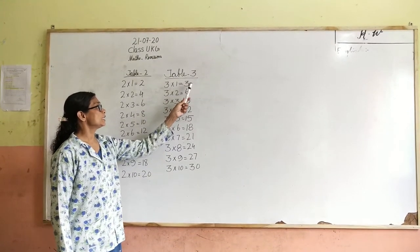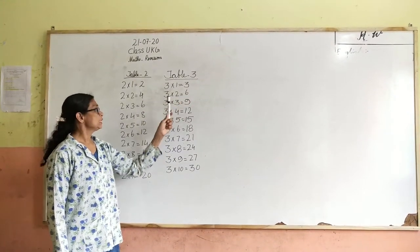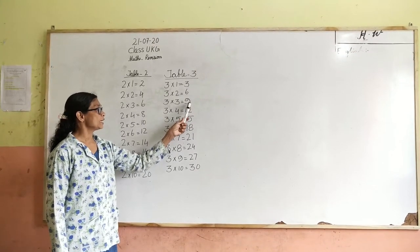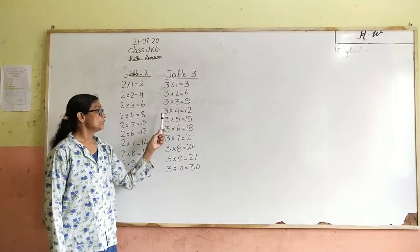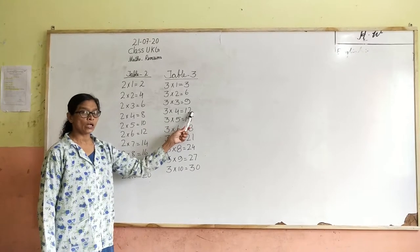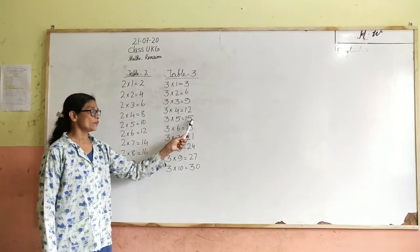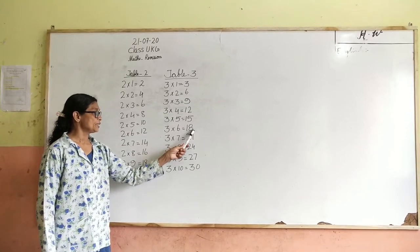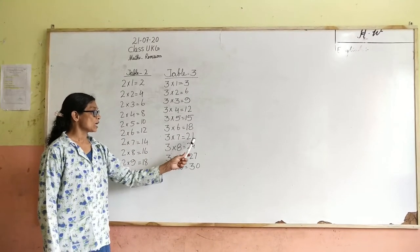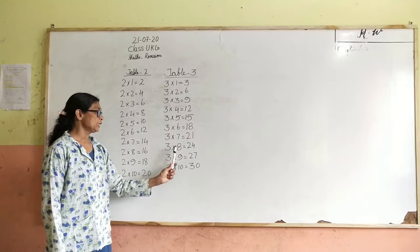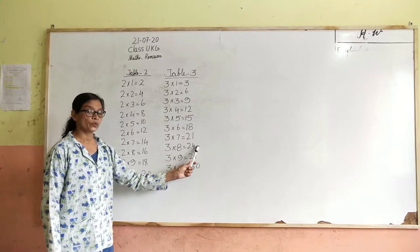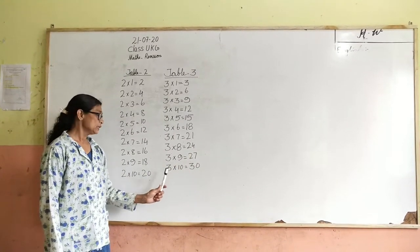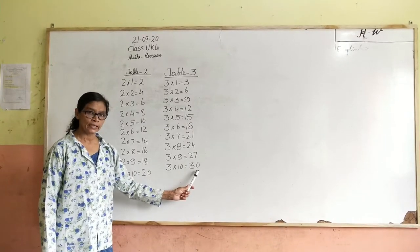3 ones are 3. 3 twos are 6. 3 threes are 9. 3 fours are 12. 3 fives are 15. 3 sixes are 18. 3 sevens are 21. 3 eights are 21. 3 nines are 27. 3 tens are 12.